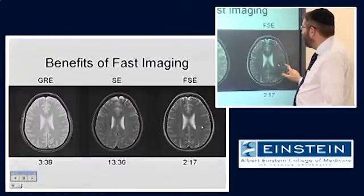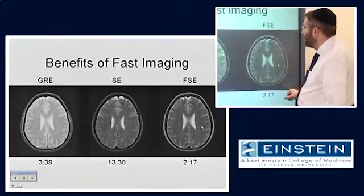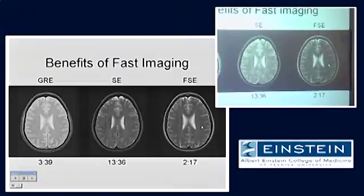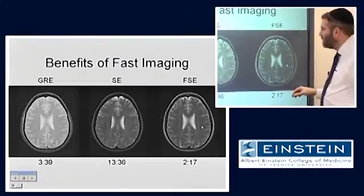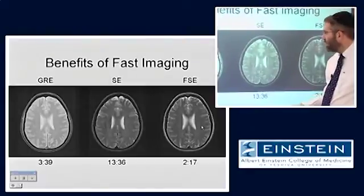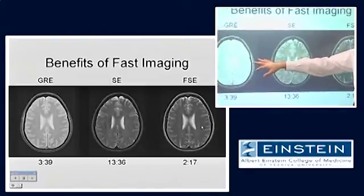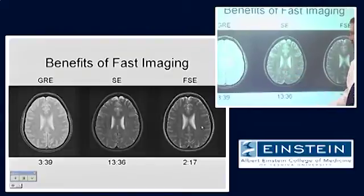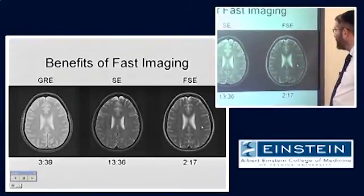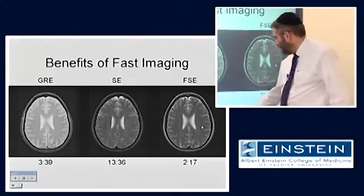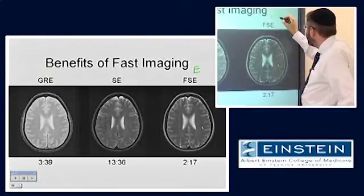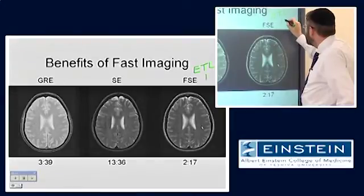If we talk about fast spin-echo imaging, here are three examples — hot off the press, done yesterday. There's a gradient echo image on the left, a spin-echo image in the middle, and a fast spin-echo image on the right. The echo train length is 12.